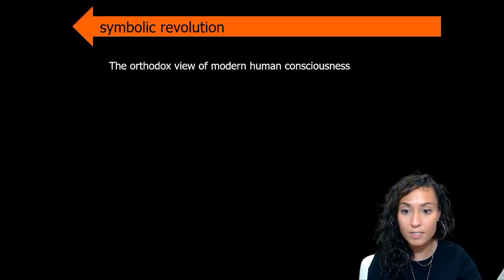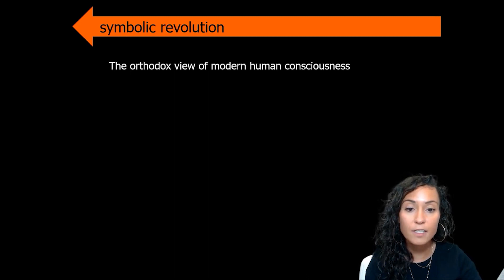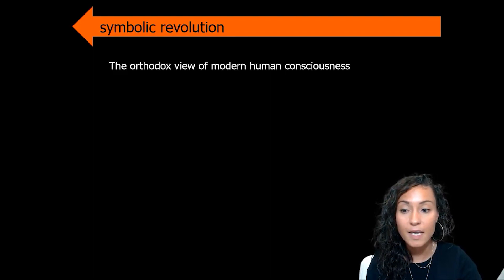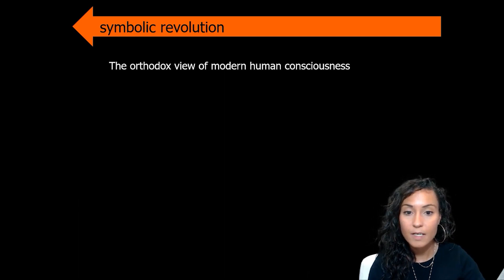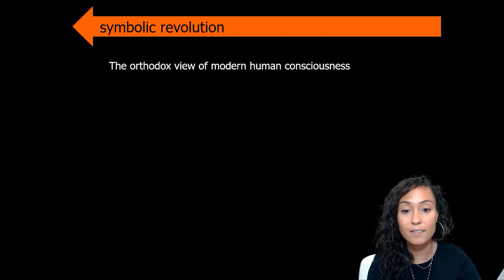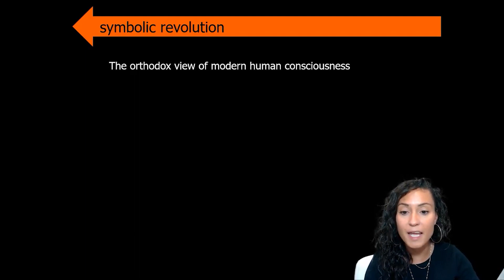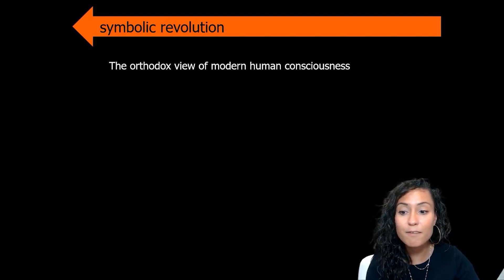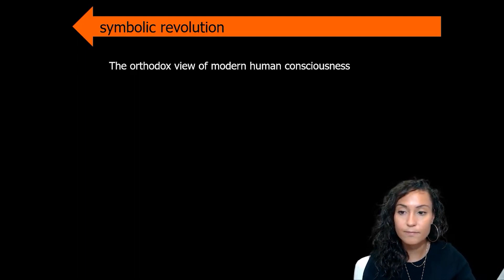According to Lewis-Williams, the orthodox view of modern human consciousness entails abstract thinking — the ability to act with reference to abstract concepts not limited in time and space. It also involves planning depth, or the ability to formulate strategies based on past experience and act upon them in a group context. This modern human consciousness is also behavioral, economic, and technological in its innovation, as well as symbolic — the ability to represent objects, people, and abstract concepts with arbitrary vocal or visual symbols, and to reify such symbols in cultural practice.